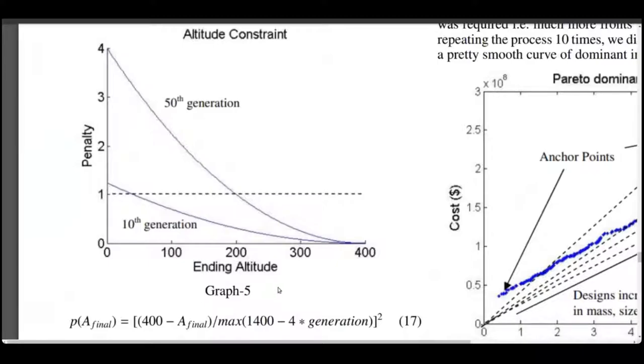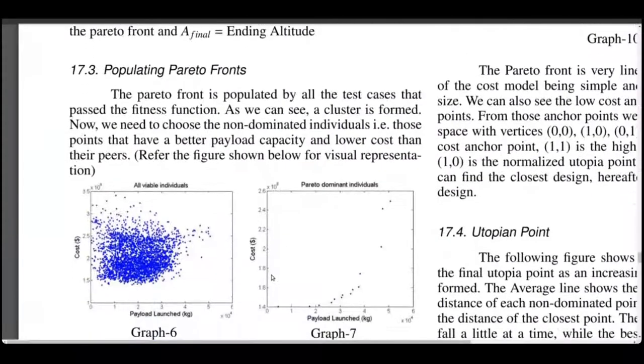Then, these fit functions are plotted onto a Pareto front with the X and Y axes corresponding to the payload capacity and price respectively. Then, the non-dominated individuals, i.e., the ones that are better than the others are selected from this min-max Pareto front. The graph on the right is the representation of the same.